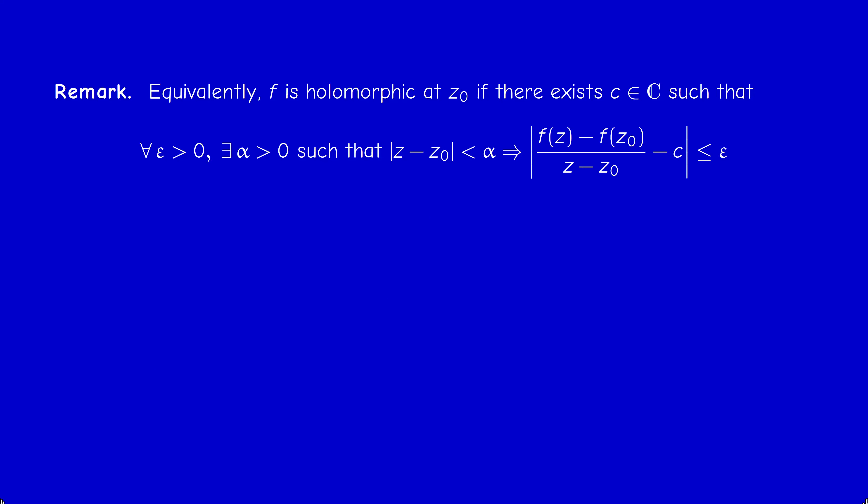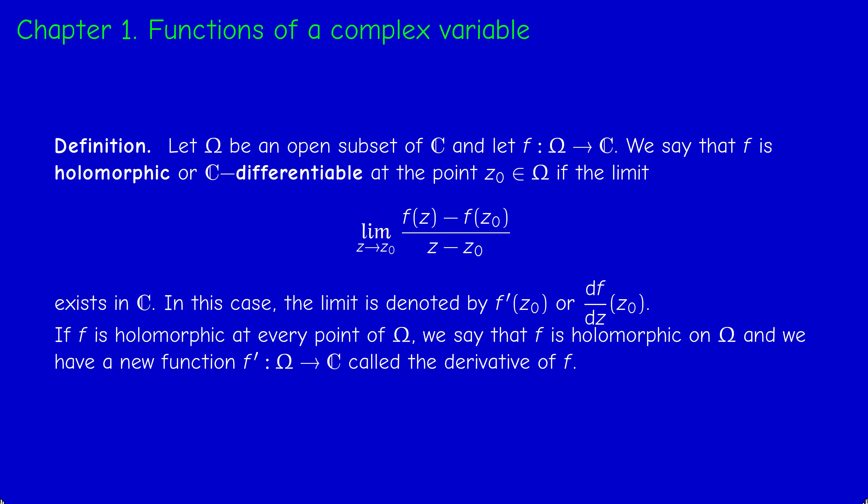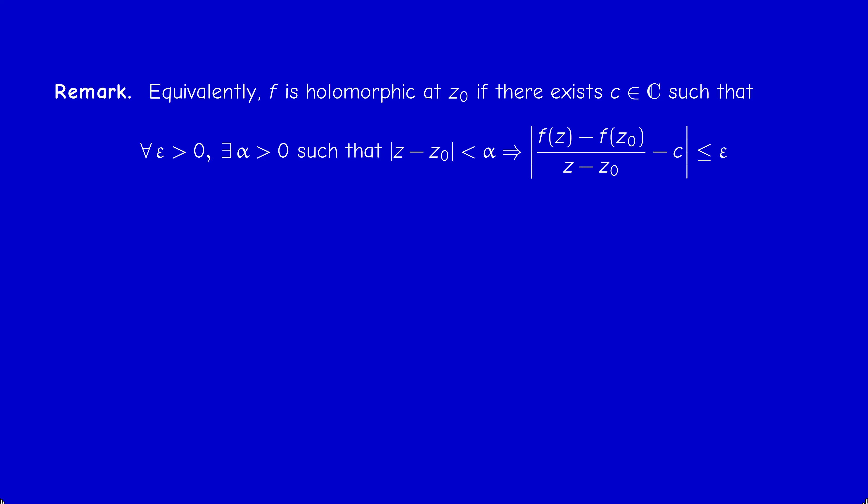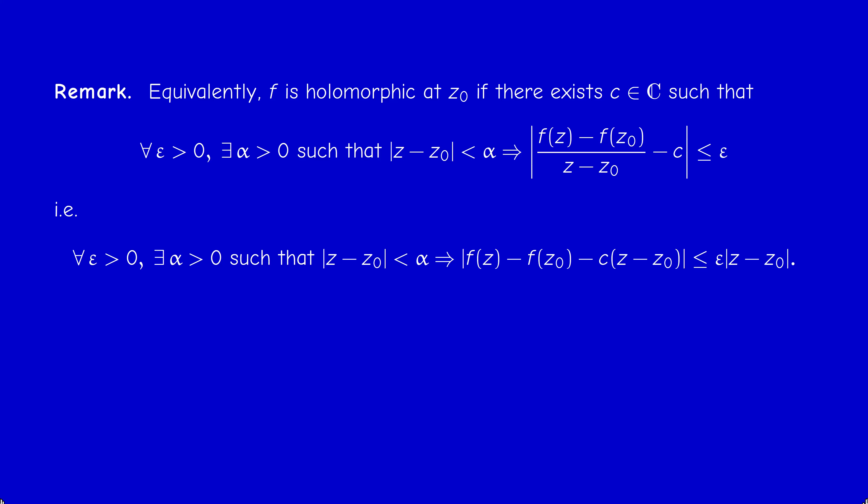Going back to the definition of limits, if F'(Z₀) is denoted by c, then saying that the limit equals c means that the distance between Newton's ratio and the limit can be made arbitrarily small — smaller than any positive number — provided the denominator is small enough. This is the epsilon-delta definition. If I multiply by |Z − Z₀| and write Z − Z₀ as H tending to zero, I get that the difference F(Z₀ + H) − F(Z₀) minus the derivative times H is a small-o of H.